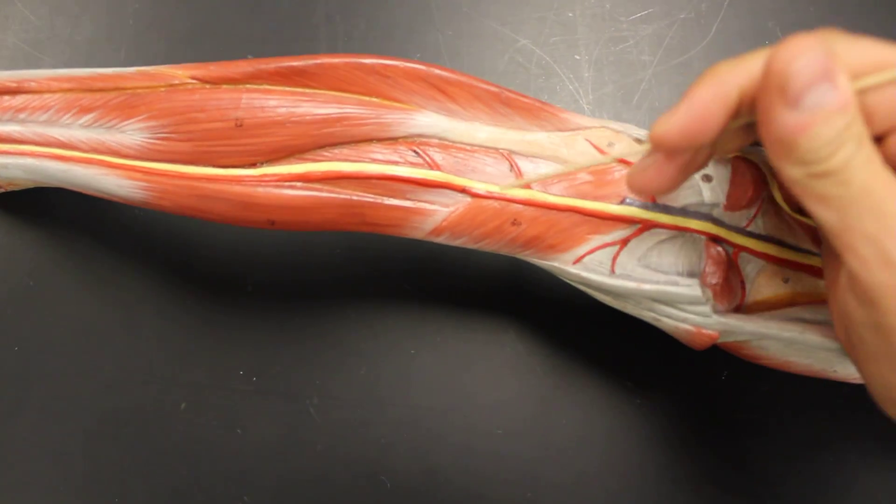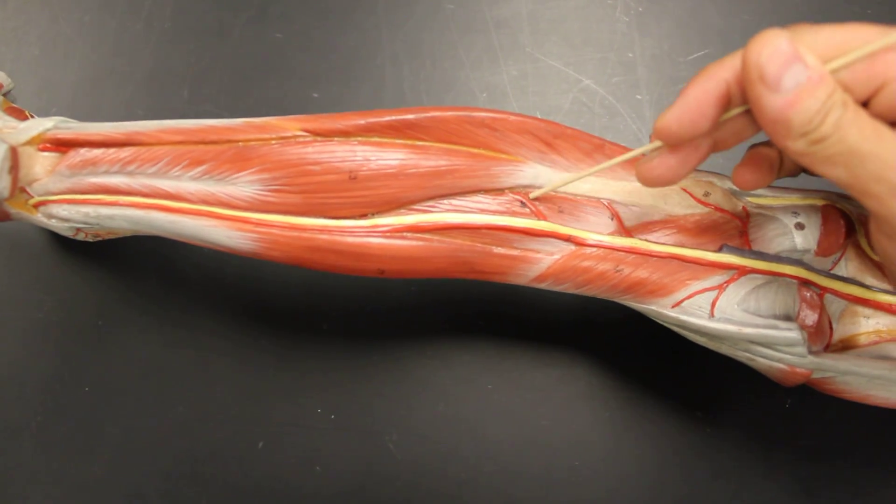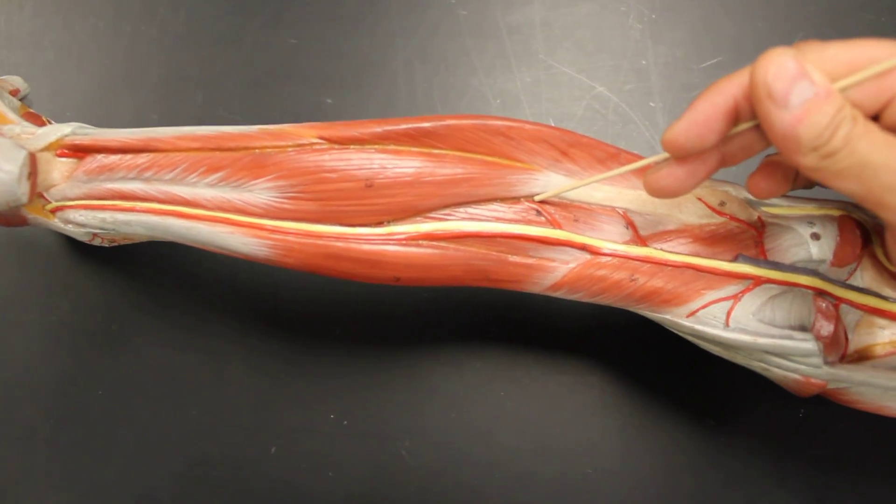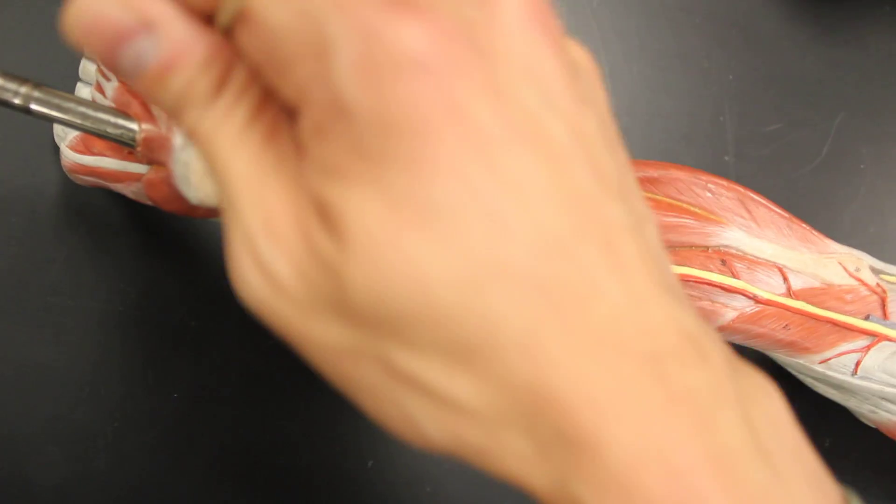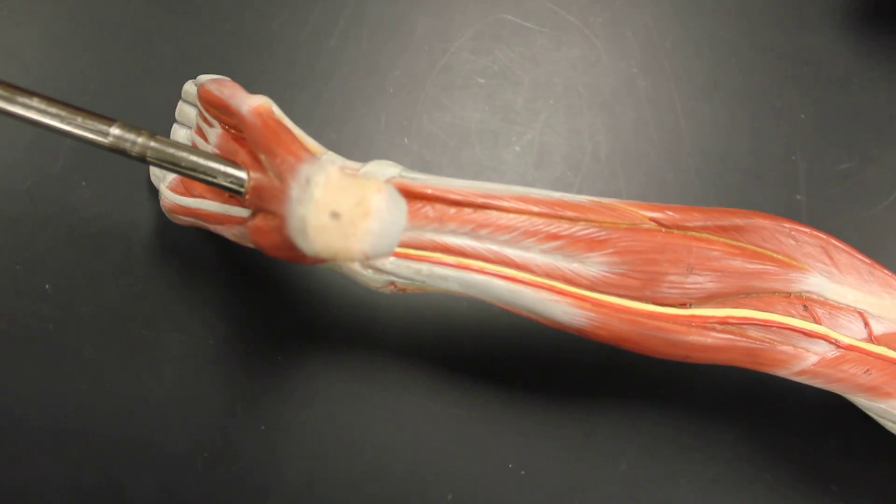This is the posterior tibial. The posterior gives one last branch called the fibular branch or peroneal until it goes into the foot, branching off into the medial and lateral plantar, giving the plantar arch.